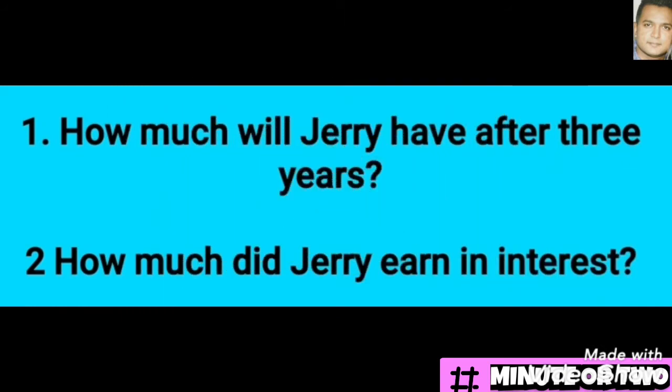There are two basic types of questions that can be asked. First, they may ask how much will Jerry have after three years. The second type would be how much interest did Jerry earn — that is, the interest amount only. We will look at greater examples from exam papers in future videos; this is just to give you an idea of the concept.